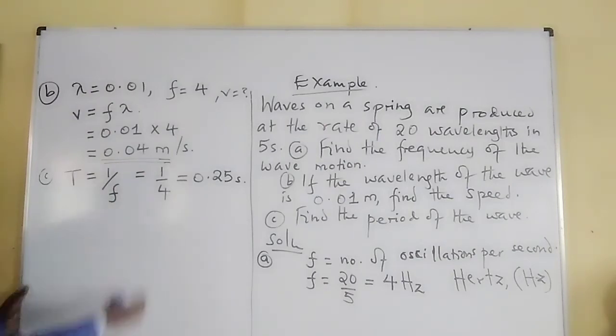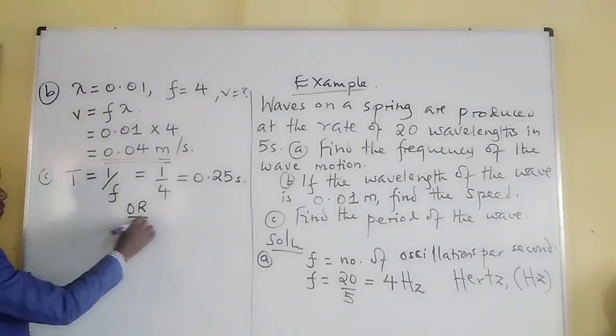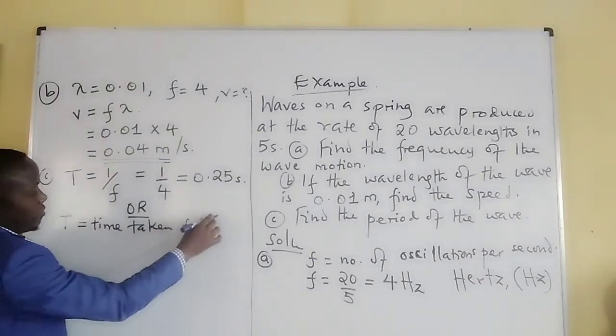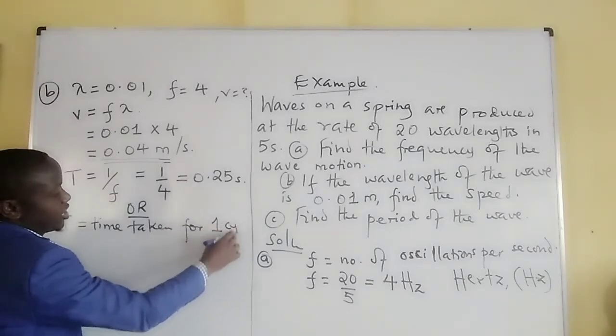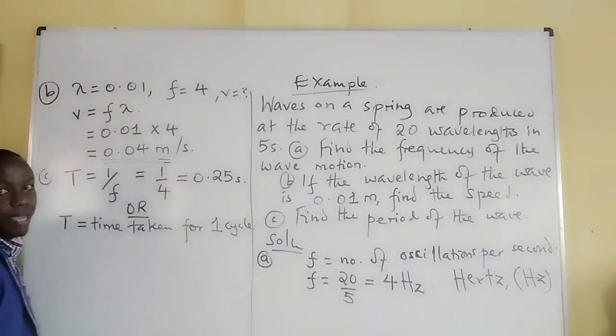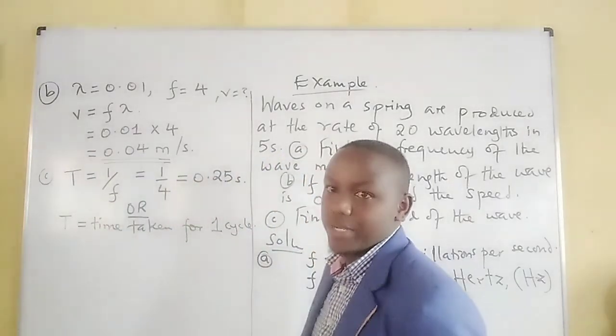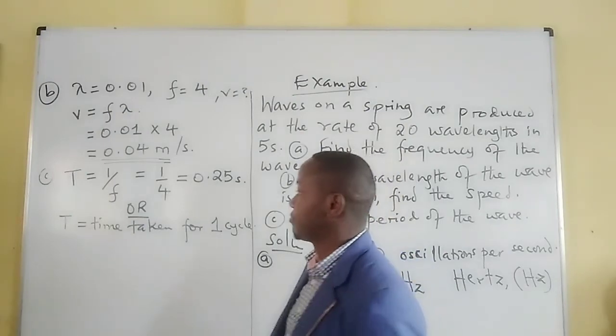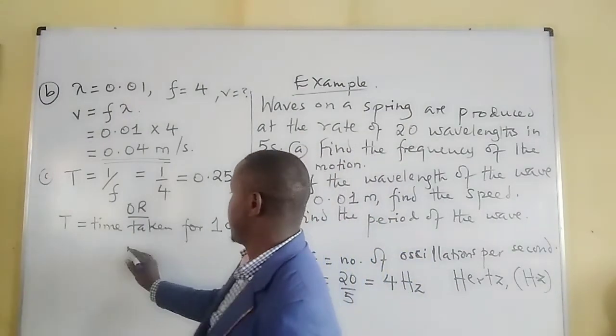It is important to know that alternatively, we can say that T is the time taken for one oscillation or one cycle. This means for us to get the time taken for one cycle, in this case, if 20 cycles or 20 wavelengths...